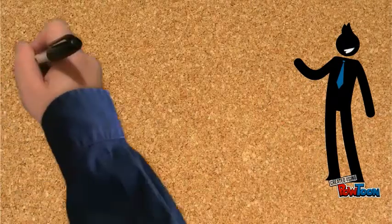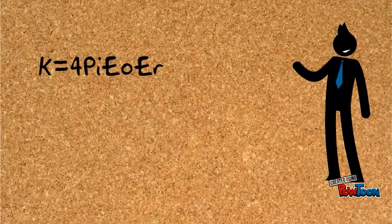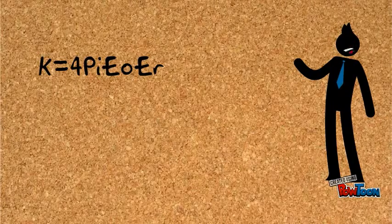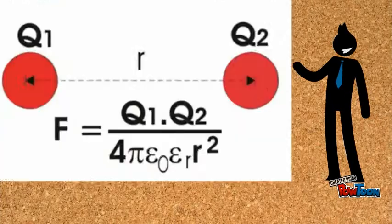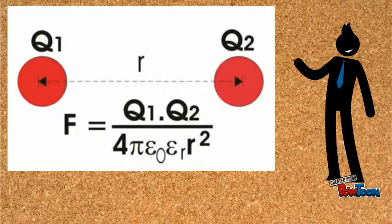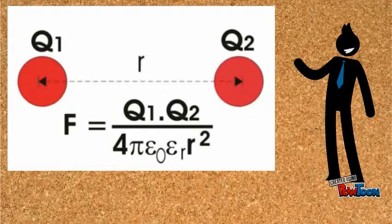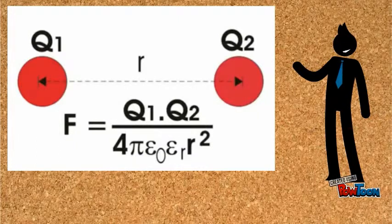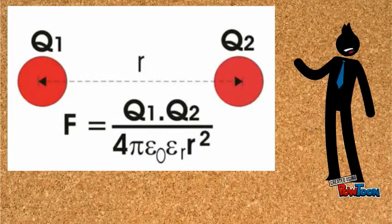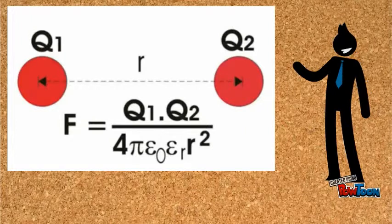In SI system, K equals 4 pi epsilon 0 epsilon r. The force acting between the charge is expressed as F equal to Q1 into Q2 divided by 4 pi epsilon 0 epsilon r into R-squared.